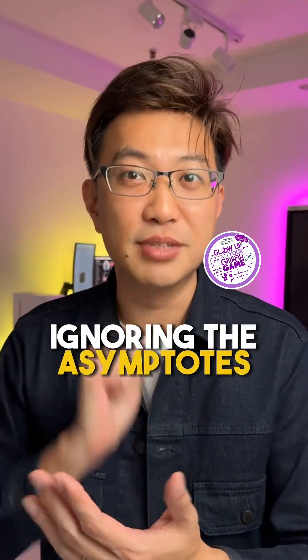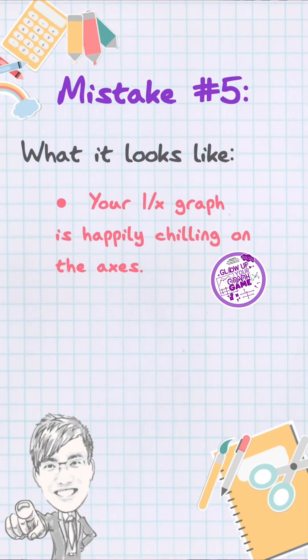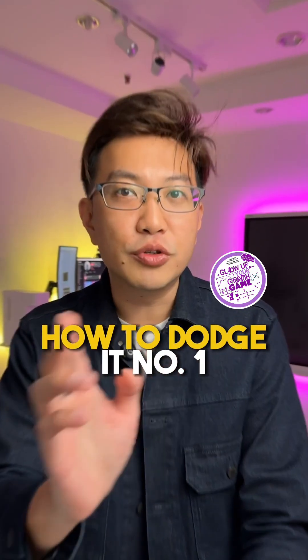Mistake number 5: ignoring the asymptotes. What it looks like — your 1/x graph is happily chilling on the axis. No — that's illegal in math land.